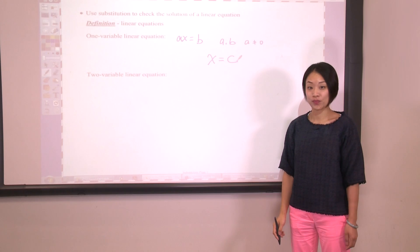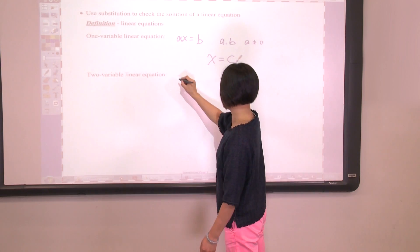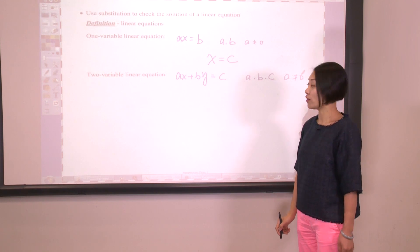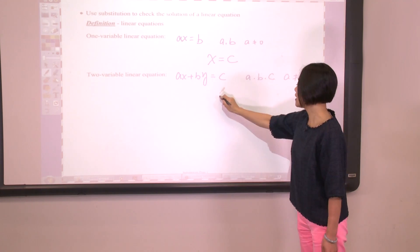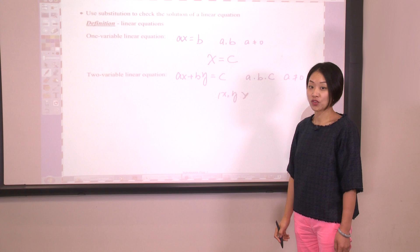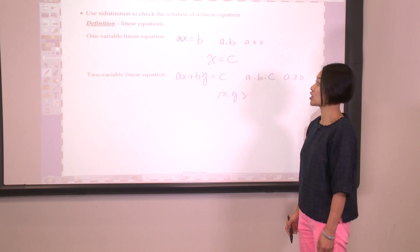For a two-variable linear equation, the standard form is ax plus by equals c, where a, b, and c are real numbers and a cannot be zero as well. It will have a solution of the form (x, y), which is an ordered pair. Now let's see some examples of how to use substitution to check the solution of a linear equation.